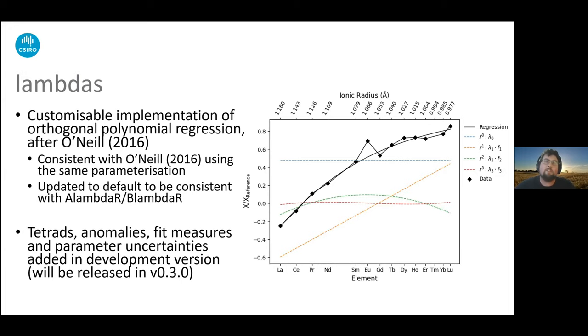Recently I've added the tetrads anomalies, as well as the fit measures and parameter uncertainties, and this will be released in version 0.3. Just one thing I wanted to note here is that the lambdas, as well as being a good way to parameterize your rare earth data, can be particularly useful if you want to use rare earth data for modeling or machine learning, where the issues of multi-collinearity, where things correlated to one another, as well as the dimensionality being 14-dimensional for the rare earth data is a bit of an issue. So if you want to chat about using rare earths and lambdas for machine learning, you can chat to me later about that.